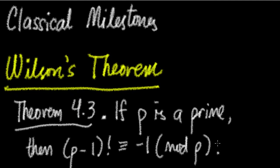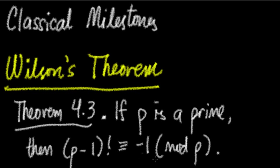Wilson's theorem in our module is Theorem 4.3. It states: if p is a prime, then (p − 1)! is congruent to −1 mod p. So if p is prime, you take that prime number, subtract one, compute the factorial of that, and it is congruent to −1 mod p.